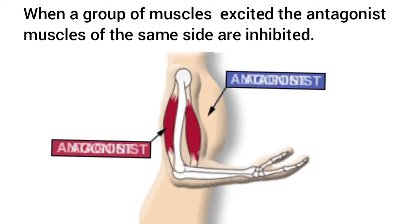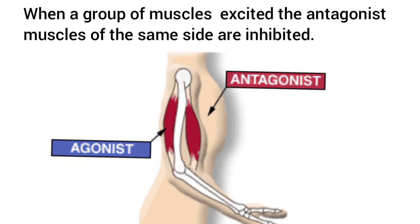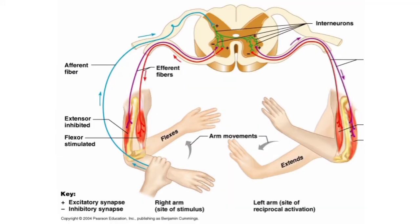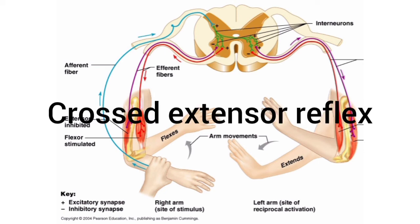Now we will see about Reciprocal Inhibition. Reciprocal Inhibition is when a group of muscles are excited, the antagonistic muscles of the same site are inhibited. Consider a flexor reflex in a limb — the afferent nerve fibers which evoke a flexor reflex have connections with the motor neurons of the flexor muscles and also connect with the motor neurons of the antagonistic muscles, that is the extensor muscles. So when flexor muscles are excited and contracted, the extensor muscles are inhibited through an interneuron.